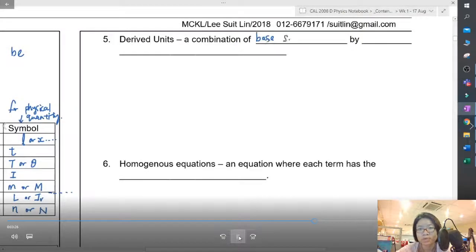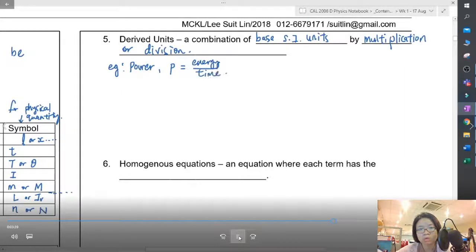We talk about base units; now we're going to talk about derived units, which are a combination of base SI units by multiplication or division. For example, let's say now I choose a physical unit that is not base SI, which is power: energy over time. The unit for power is watt (W).